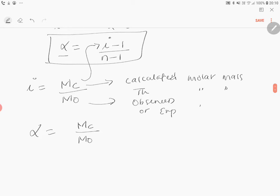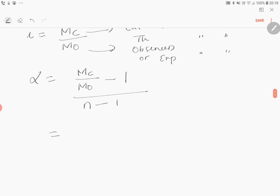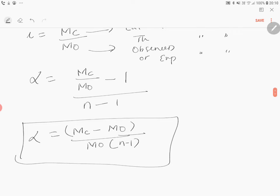So Mc by Mo is given by i minus one divided by n minus one. This will be equal to Mc minus Mo divided by Mo into n minus one. Therefore, I can say alpha is equal to calculated molar mass minus observed molar mass divided by observed molar mass into n minus one.